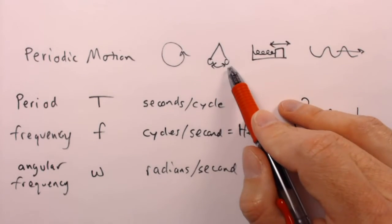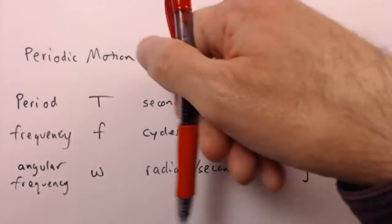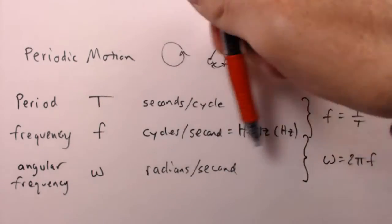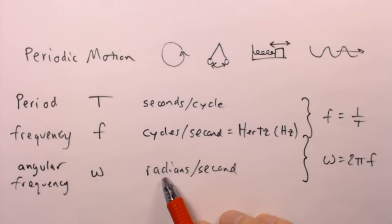For example, look at the pendulum. This pendulum swings back and forth through an angle, but that angle has nothing to do with these radians right here. The angular speed is actually quite complicated, but the angular frequency is still simply 2π times the frequency in cycles per second.